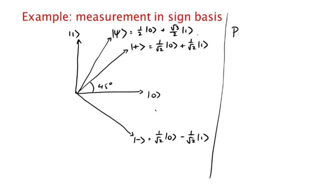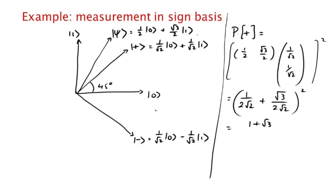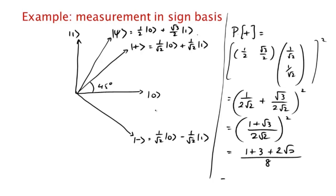But how would you work this out as a vector? Well, the probability that the outcome of the measurement is |+⟩ is just given by the inner product between the two vectors. So you multiply corresponding coordinates: (1/2, √3/2) times (1/√2, 1/√2). You take the magnitude squared — but everything is real, so you just take the square. That gives (1/(2√2) + √3/(2√2))², which is ((1 + √3)/(2√2))², which is (1 + 3 + 2√3)/8, which is (2 + √3)/4.